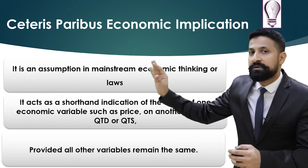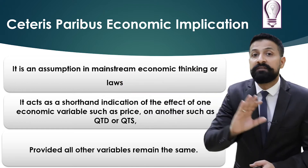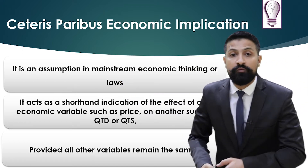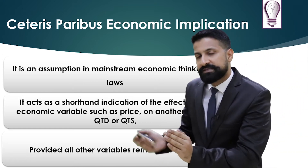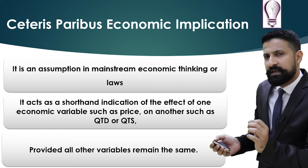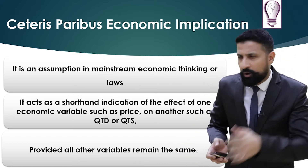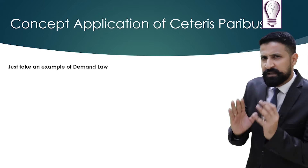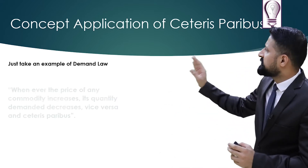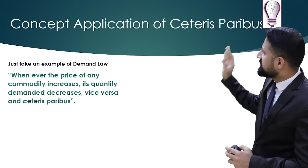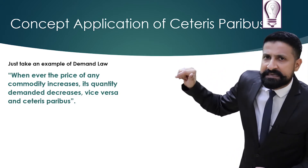All other variables will remain constant — immovable, they will not move. To understand what this means, let's apply the concept to a real-life example. Take the demand law: whenever the price of any commodity increases, its quantity demanded decreases.